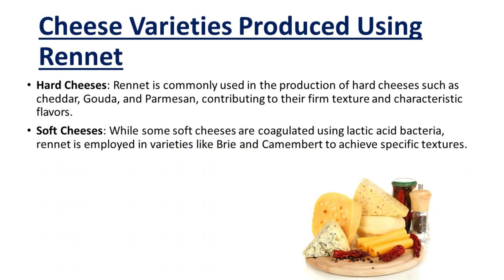Rennet is commonly used in the production of hard cheeses such as cheddar, gouda, and parmesan, contributing to their firm texture and characteristic flavors. While some soft cheeses are coagulated using lactic acid bacteria, rennet is employed in varieties like brie and camembert to achieve specific textures.